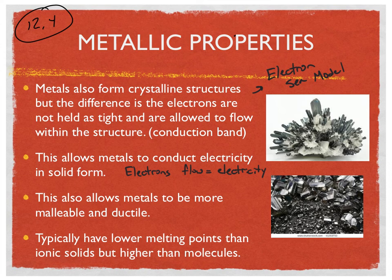Typically, metals have lower melting points than ionic solids and covalent networks alike, but higher than molecular substances.